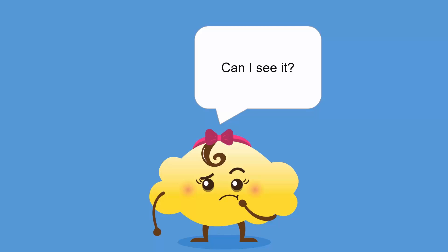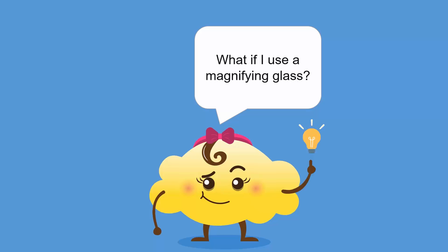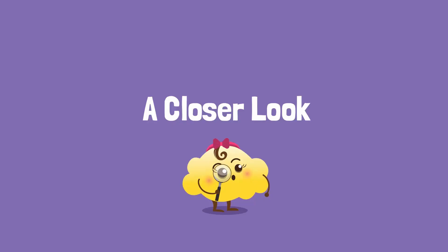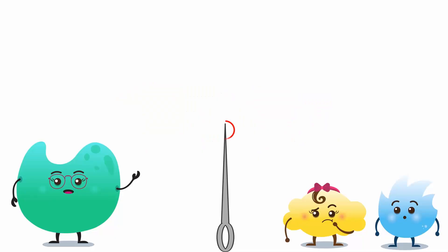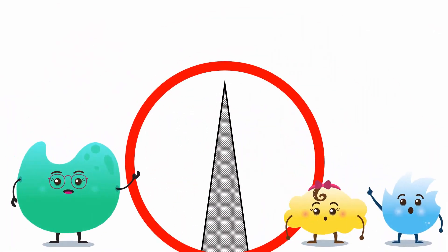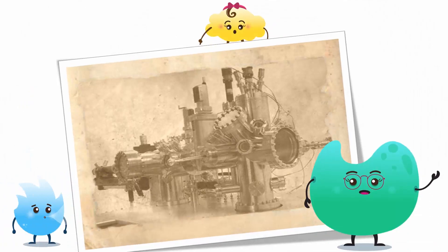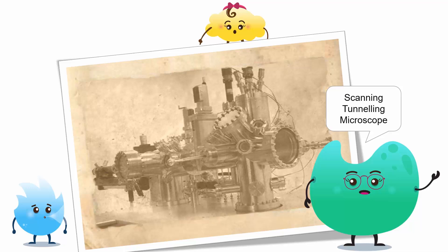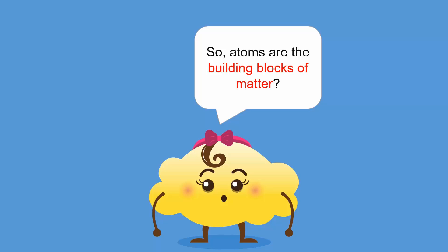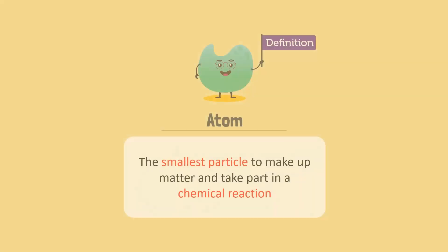An atom cannot be seen by the naked eye or a magnifying glass. Let's have a closer look. An atom is so small that if you were to take a needle and zoom into its tip with the help of a powerful microscope, you would see billions of atoms. In 1981, scientists invented such a microscope, known as the scanning tunneling microscope. It was the first microscope that allowed us to see atoms.